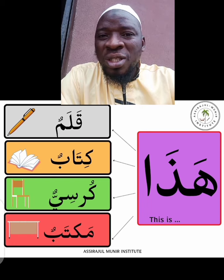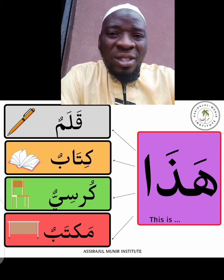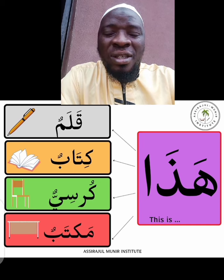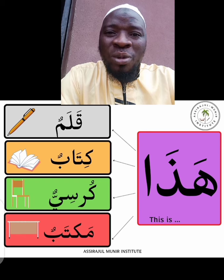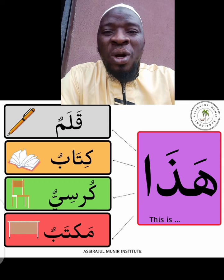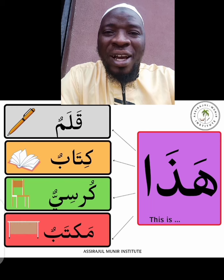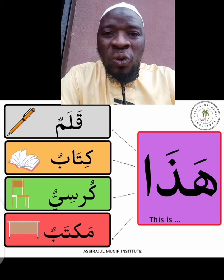Maktab can also be used to mean office, but here it is used as table. When we say hadha, it is as if saying 'this is,' because hadha means 'this' and also 'this is.' So hadha kolamun means 'this is a pen.' Hadha kitabun means 'this is a book.'